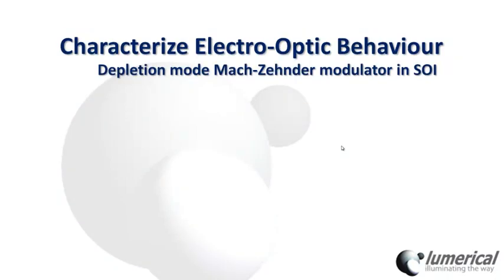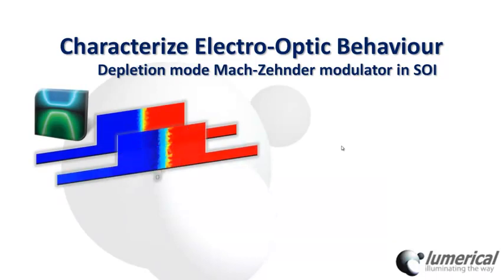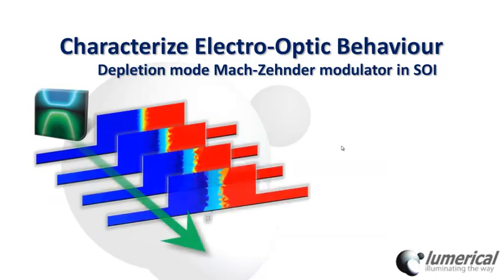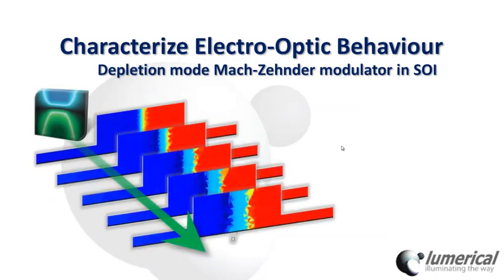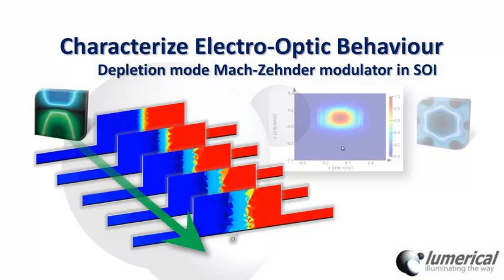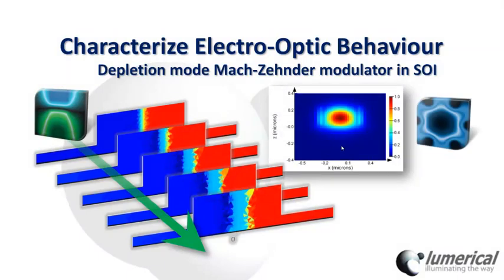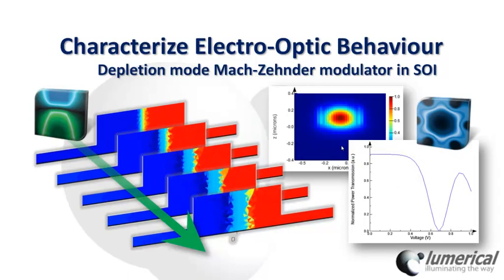In this example of a depletion mode Mach-Zehnder modulator, the waveguide carrier density is extracted with Lumerical's device as a function of increasing bias. This will modify the spatial refractive index profile of the waveguide, and Mode Solutions can then be used to calculate the modulation response, such as the v-pi voltage, the insertion loss, and the extinction ratio.